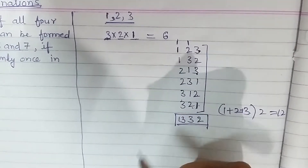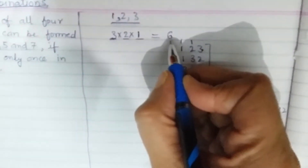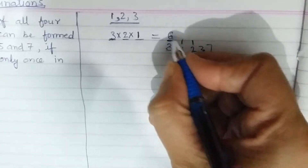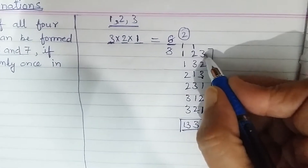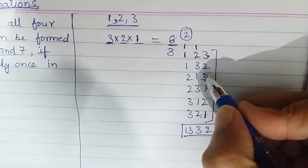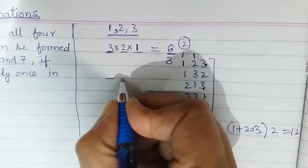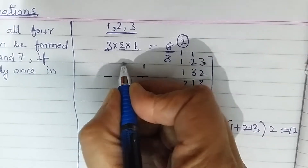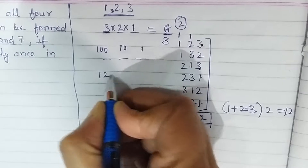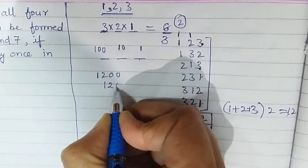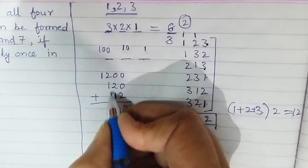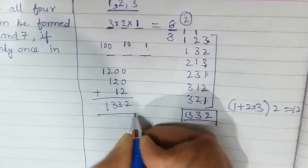But we will not go with that long method. Here is the easy trick: the total arrangements are 6. Divide by the number of digits, which is 3, and we get 2 — the number of times each digit repeats at every place. The sum of digits is 1+2+3 = 6, so at each place the sum is 6×2 = 12. Multiply by place values: hundreds place gives 12×100 = 1200, tens place gives 12×10 = 120, units place gives 12×1 = 12. Adding these gives 1332 — the same answer!